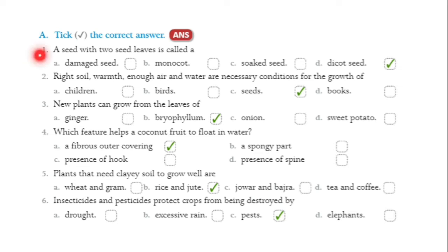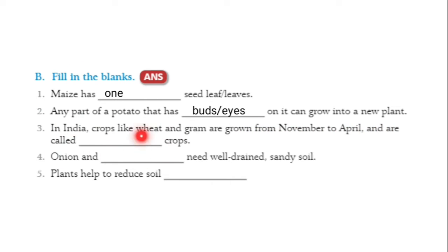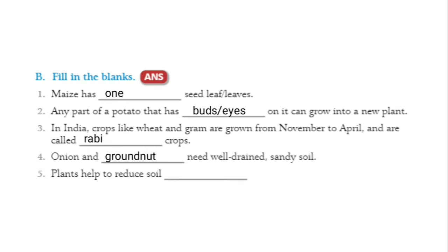Fill in the blanks: Maize has one seed leaf, so it is a monocot seed. Any part of a potato that has eyes on it can grow into a new plant. In India, crops like wheat and gram grown from November to April are called Rabi crops. Onion and groundnut need well-drained sandy soil. Plants help to reduce soil erosion.